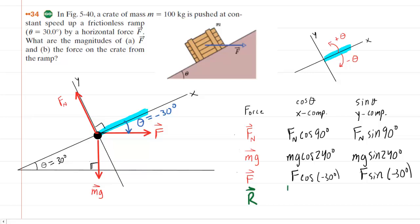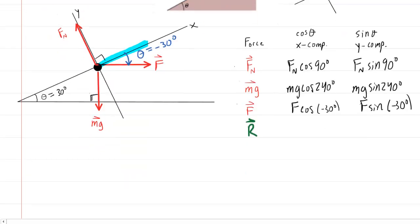We have left another row here in our table, and we've marked it R. R stands for the resultant, which is the sum of the x component forces and the y component forces. We're going to write that the resultant for the x-direction is going to equal the sum of the components. So we'll have Fn cosine of 90 plus mg cosine of 240 plus F cosine of negative 30. And then Newton's second law tells us that we set the sum of these forces equal to the mass times the acceleration.